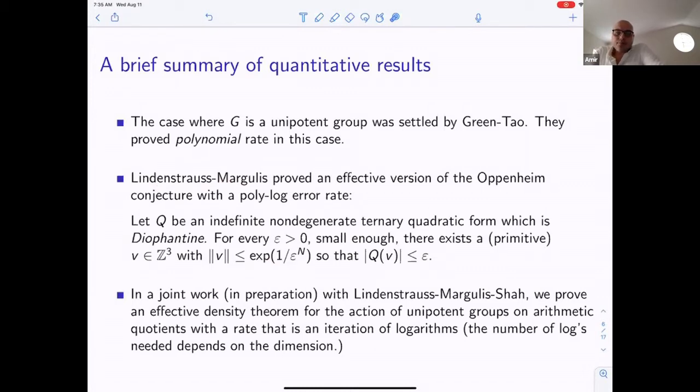In an ongoing joint work with Lindenstrauss-Margulis and Shah, we prove a full-blown effective version for unipotent flows on arithmetic quotients. The rates we get are quite bad. If this is one exponent here, imagine you're going to have exp(exp(exp(1/ε^n))), and the number of exponentials you need depends on the dimension. So the higher the dimension, the slower the rate of distribution. But given the current technology, with current technology and in this generality, this seems to be what one can do without introducing new techniques. If you want to take Dani-Margulis's proof and try to effectivize it, this is tedious work, it's challenging, and what you're going to get is a rate of this sort. It doesn't seem possible that just effectivizing existing proofs will give you better rates.